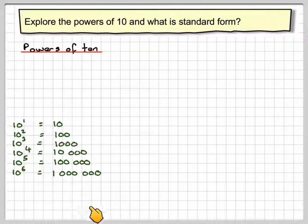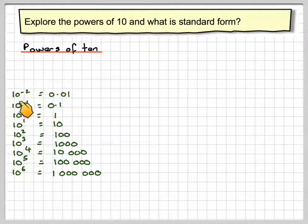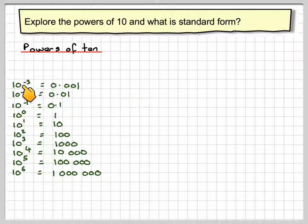If we go down, that pattern will carry on, but we could work backwards. What do we mean by 10 to the 0? Well, 10 to the 0 must be 1. And what do we mean by 10 to the minus 1? 10 to the minus 1 is 0.1, 10 to the minus 2 is 0.01, and 10 to the minus 3 is 0.001.